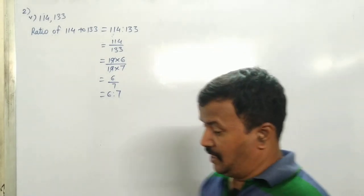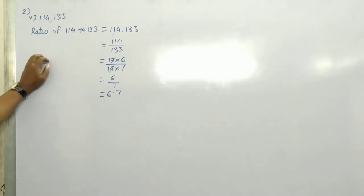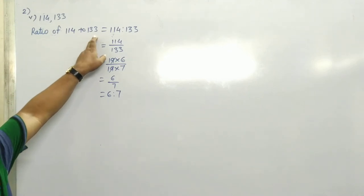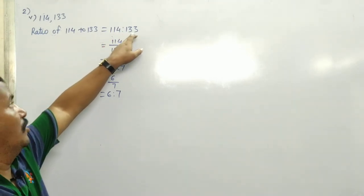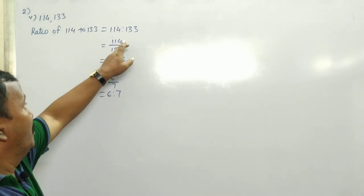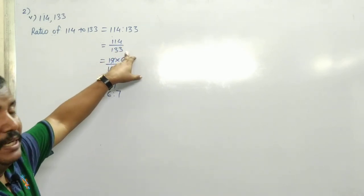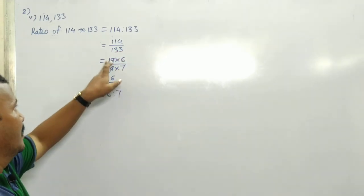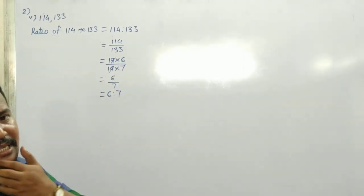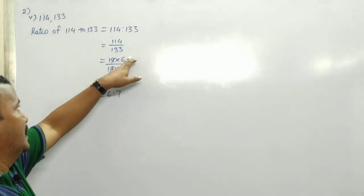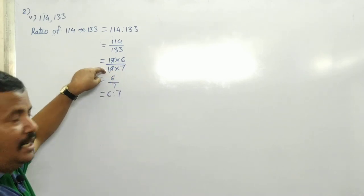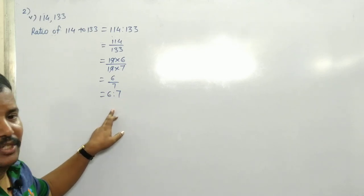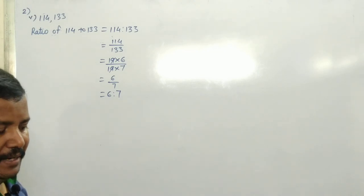Fifth sum is 114 and 133. Ratio of 114 to 133 equals 114 divided by 133. 19 times 6 is 114, 19 times 7 is 133. 19, 19 cancel. Answer is 6 ratio 7. Understand everyone? Write it down.